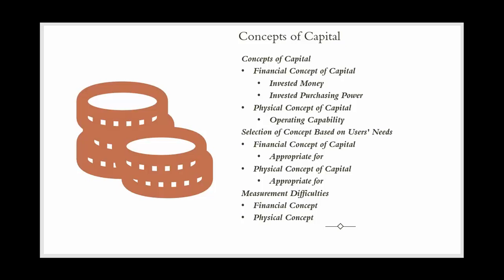For example, DEF Corporation was started with $1 million. After a year, due to inflation, the purchasing power of that $1 million decreased by 10%. If DEF Corporation adjusts its financial statements for this inflation, it shows that to maintain the same purchasing power, the company now needs $1,100,000 — 10% more than the original $1 million.